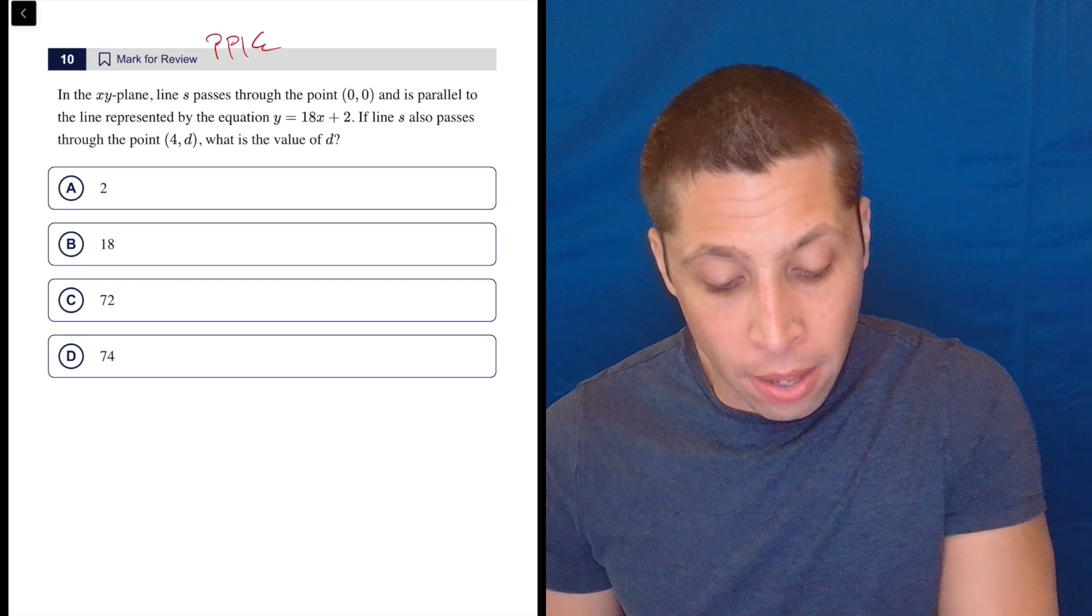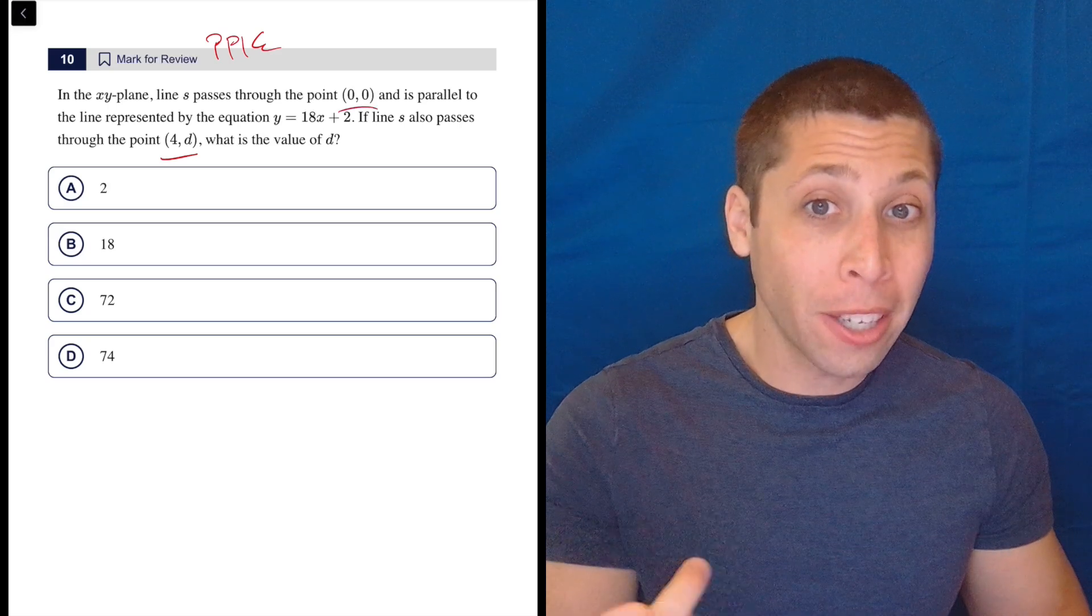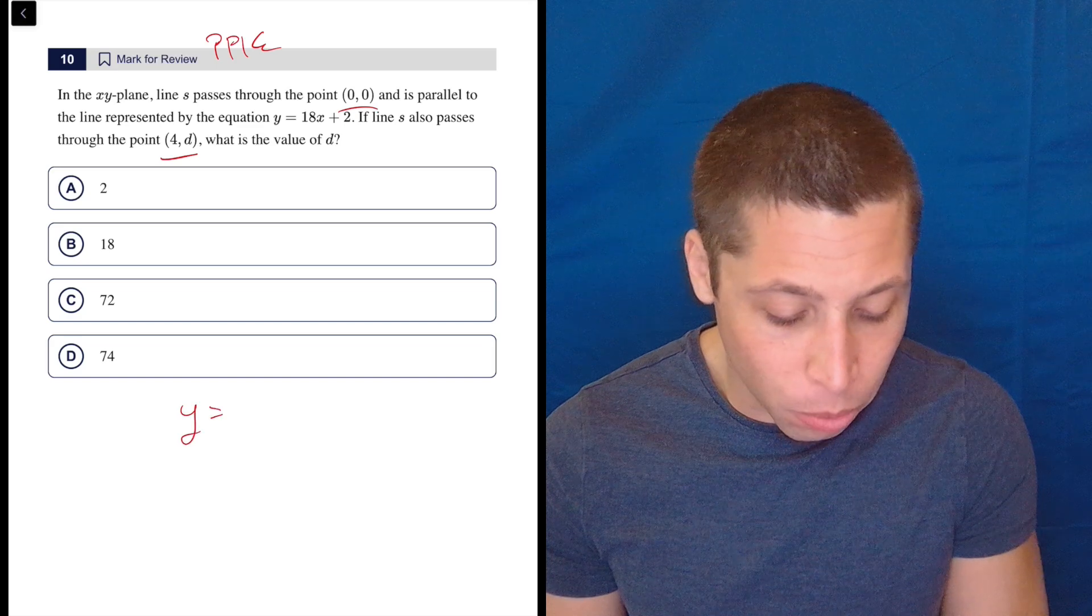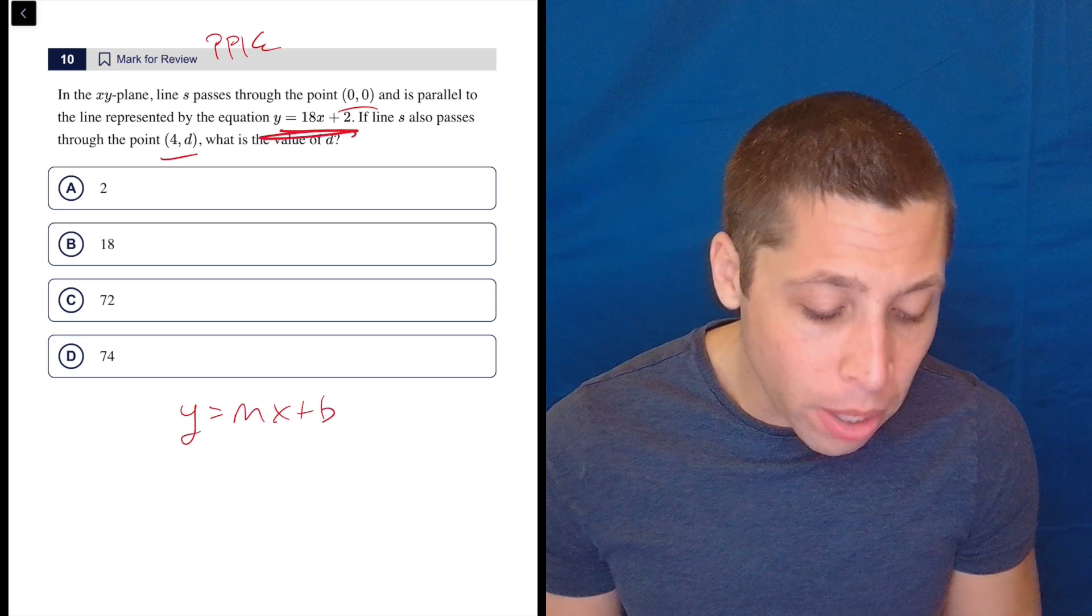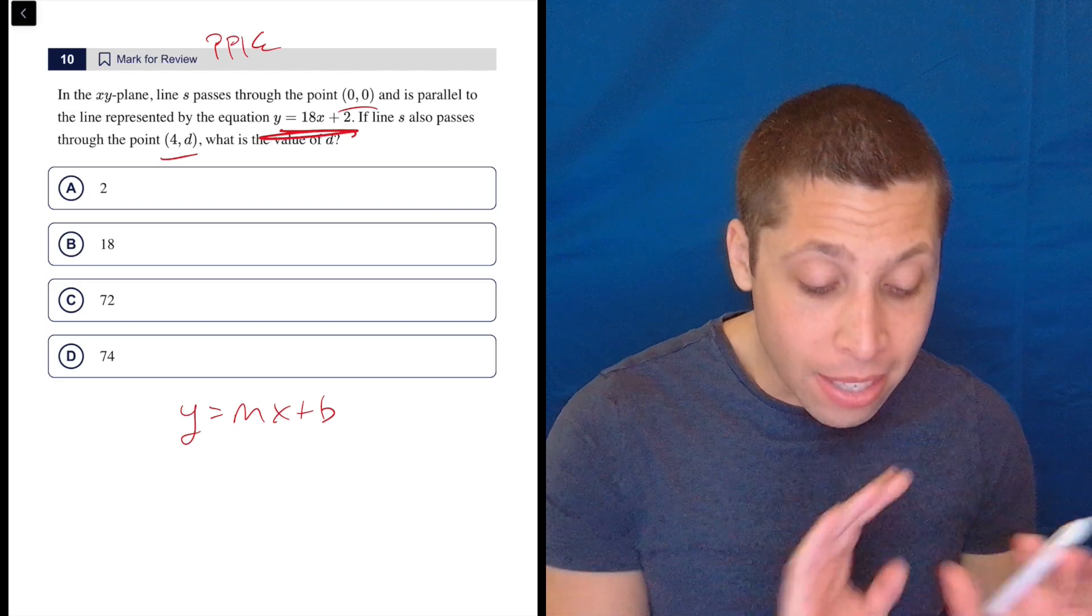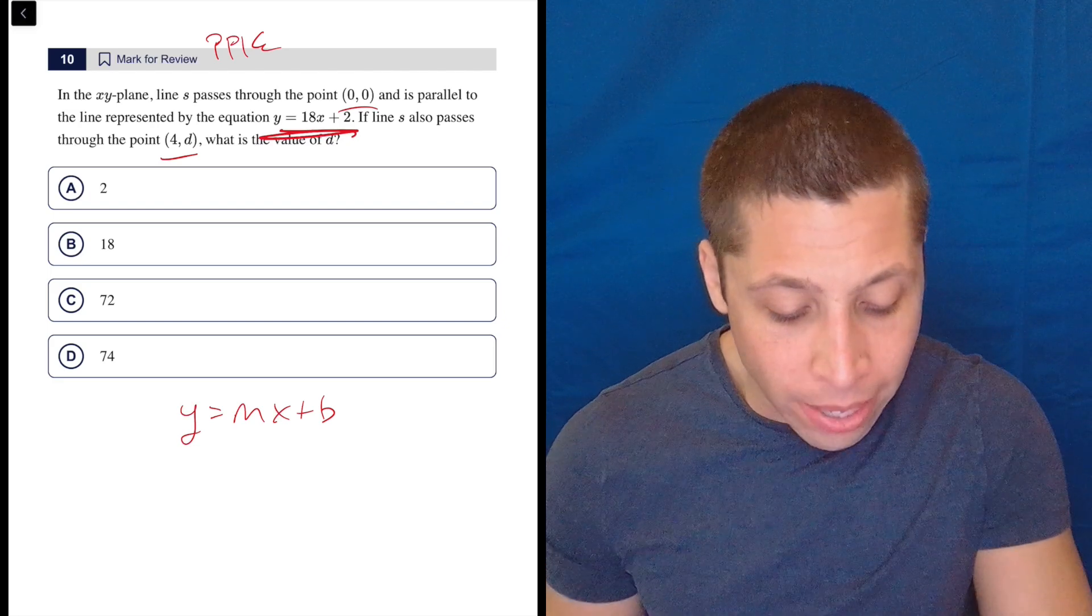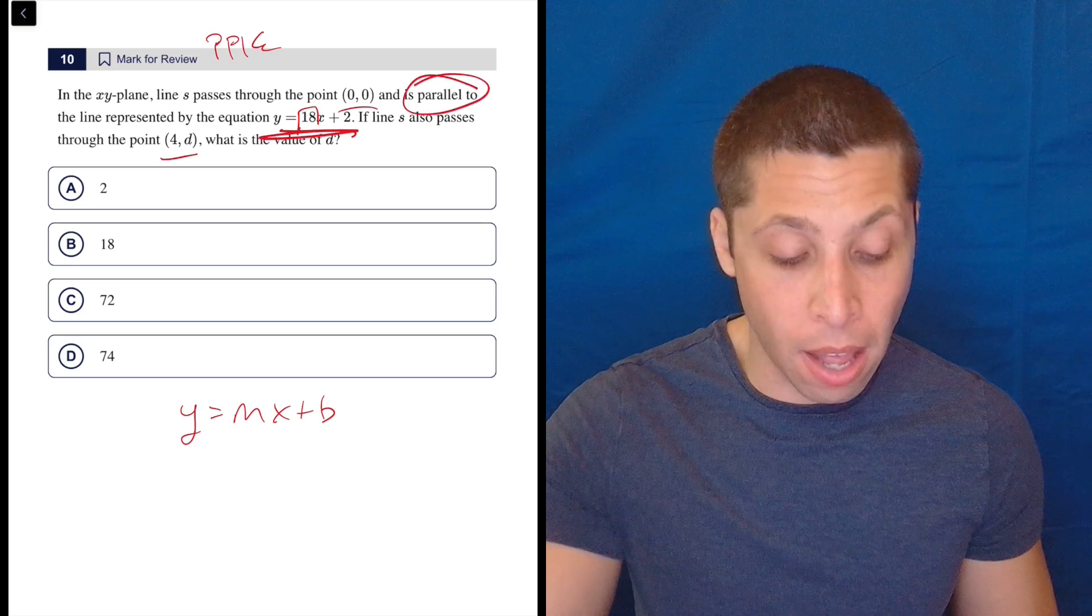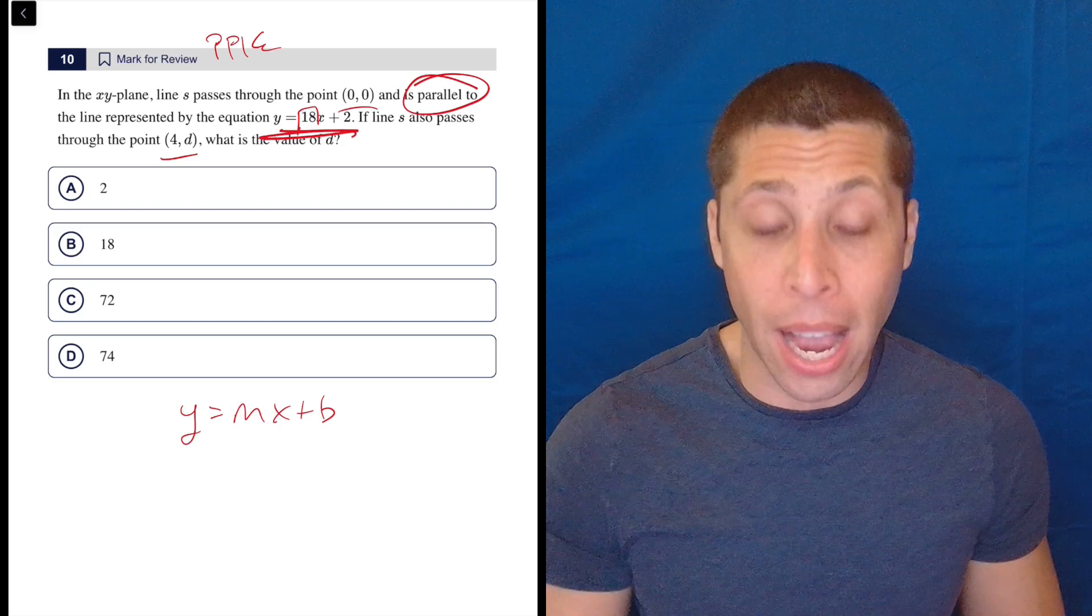So I know I'm going to plug points into equations. They're talking a lot about points, two of them, and they're talking about equations. I should know that y equals mx plus b is the equation of a line. Even if they give me this one, that's not the one I'm interested in. That's a different line, so I'm not plugging anything into that. What I am doing is taking out the 18, because I know they're talking in code about the slope of that line by saying it's parallel to line s that we actually care about.